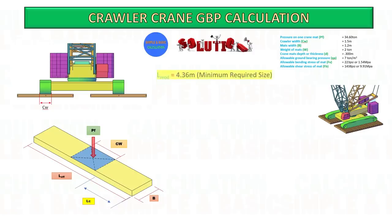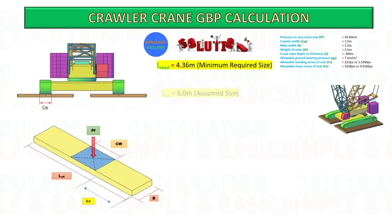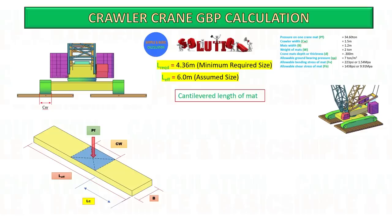Based on our first calculation, the minimum required length of mats is 4.36 meters. We assume our crane mat length is 6 meters. Start to calculate based on this assumed 6-meter length of mat — the procedure is the same as in the first calculation.